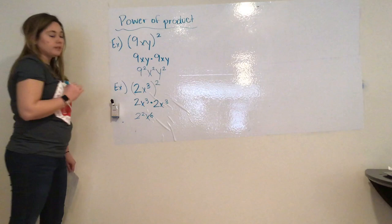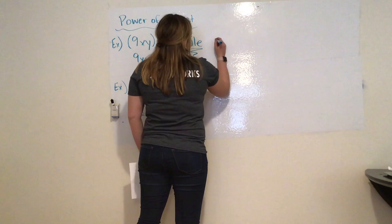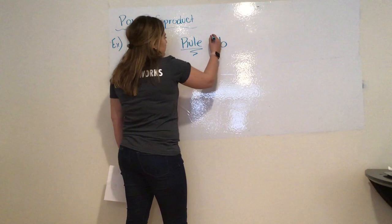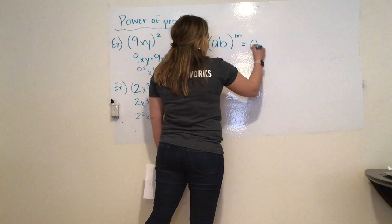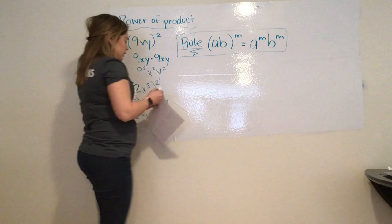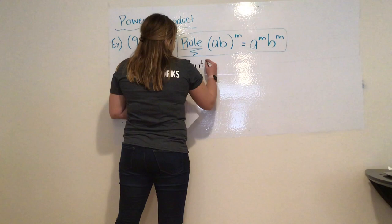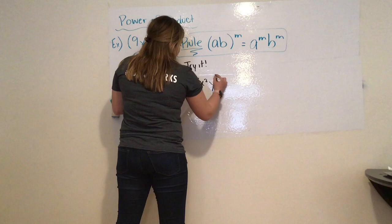So, for your rule, for the power of a product, is if you have some base A and another base B, all raised to the power of m, that now becomes A to the power of m, B to the power of m. So, that is the rule for the power of the product. Now, we're going to go into the triads. Triad number A is x squared times y to the power of 6.